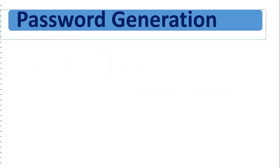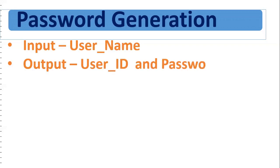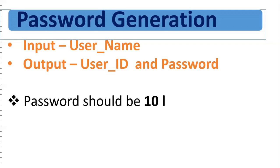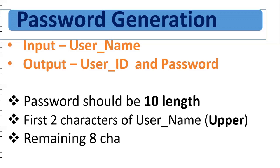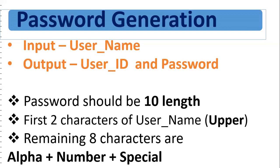The first requirement is password generation. We all know that when you join any company, you get one user ID and one default password — same concept I am using here. Input is the username; output is the user ID and password. So in the procedure, I am taking input as the username, and the outputs are user ID and password. Some conditions: the length of the password should be 10 characters, the first two characters should be uppercase of the username, and the remaining 8 characters should be a combination of alphabets, numbers, and special characters — generated using DBMS_RANDOM.